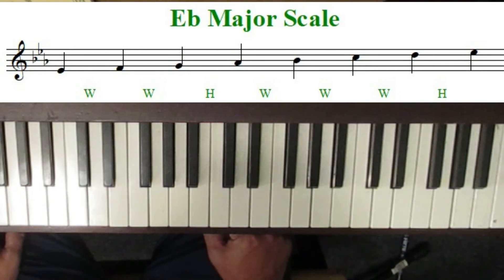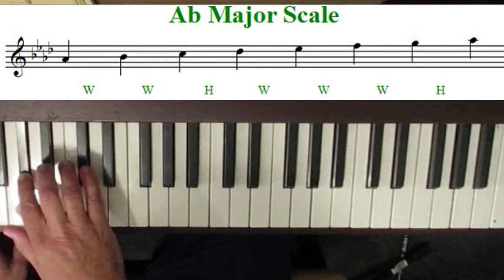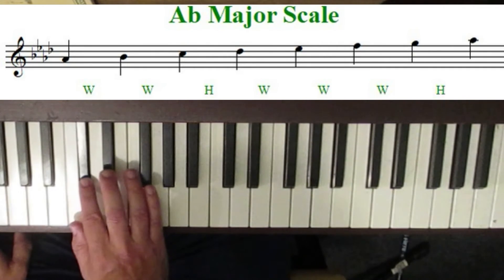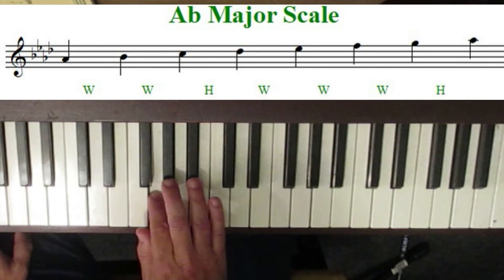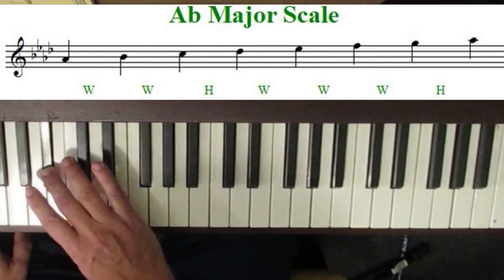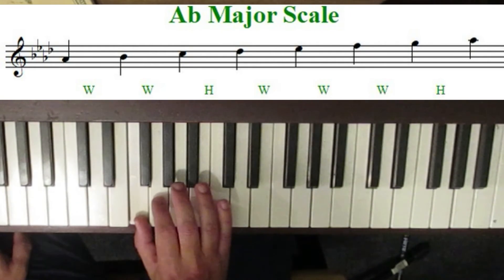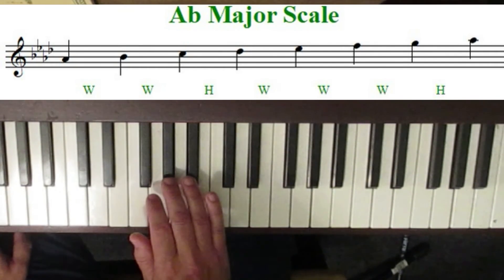Next let's move to the key of A flat major. Starting on A flat: whole step up to B flat, whole step up to C, half-step to D flat, whole step to E flat, whole step to F, whole step to G, and a half-step back to A flat to round it off. The key of A flat has four flats: B flat, E flat, A flat, and D flat.